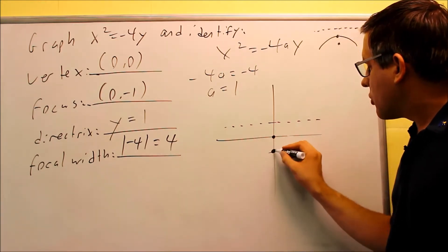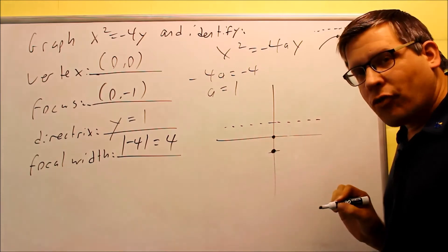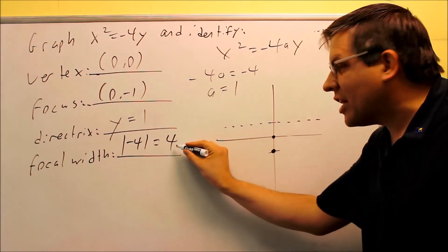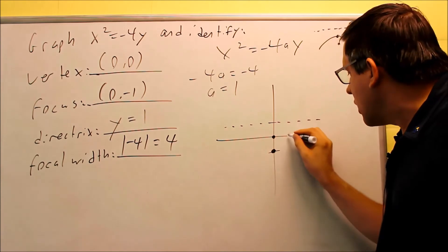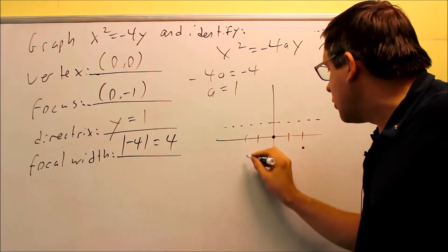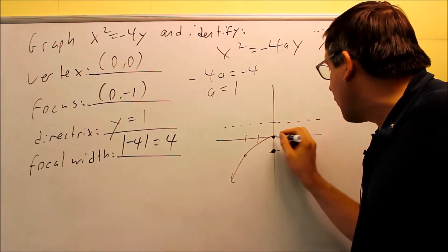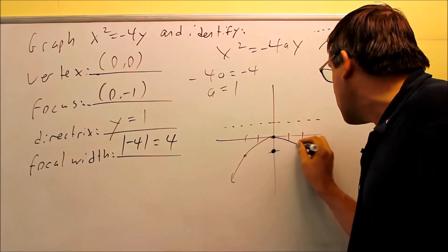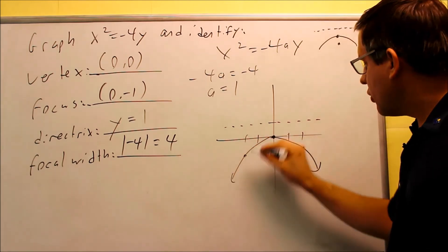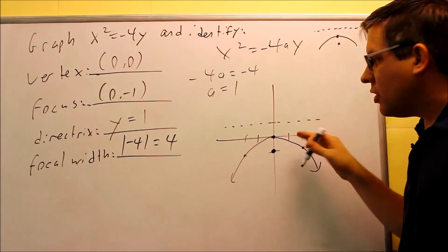At the focus, the focal width has to be 4. If I divide that by 2, I get 2 in each direction. So I go 2 to the right and make a dot, then 2 to the left and make a dot. Now my graph opens down just like that, and it matches the model. This is your final graph.